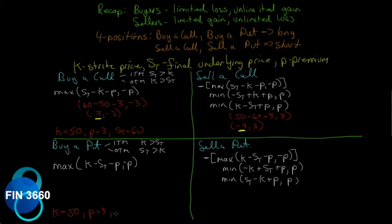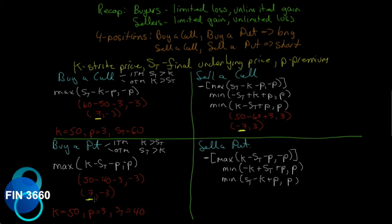Now for buying a put: same K = 50 and P = 3, but the underlying price is 40. Payoff = max(50 − 40 − 3, −3) = max(7, −3) = 7. That makes sense — we bought a put with a strike of 50 and the underlying fell to 40. For selling the put: min(40 − 50 + 3, 3) = min(−7, 3) = −7. Again the exact opposite pair.